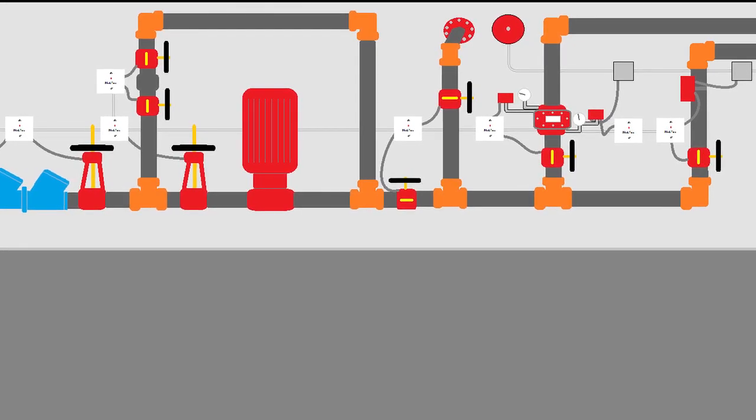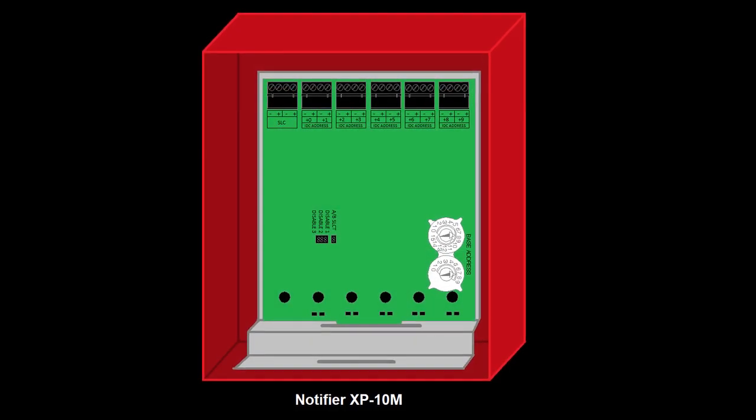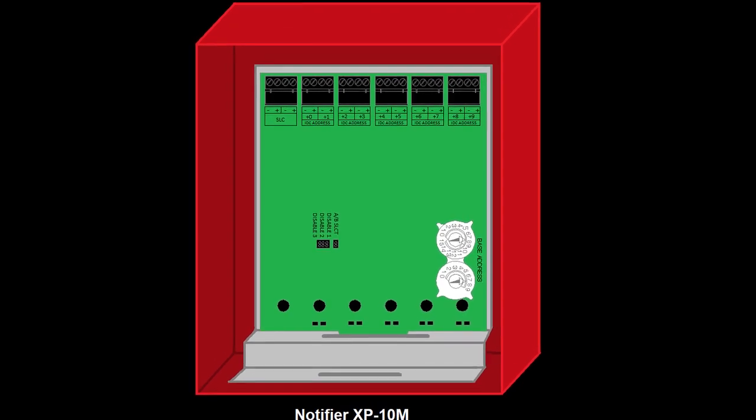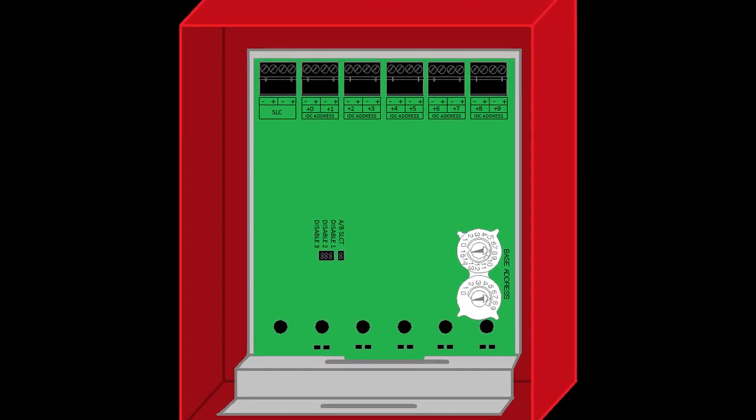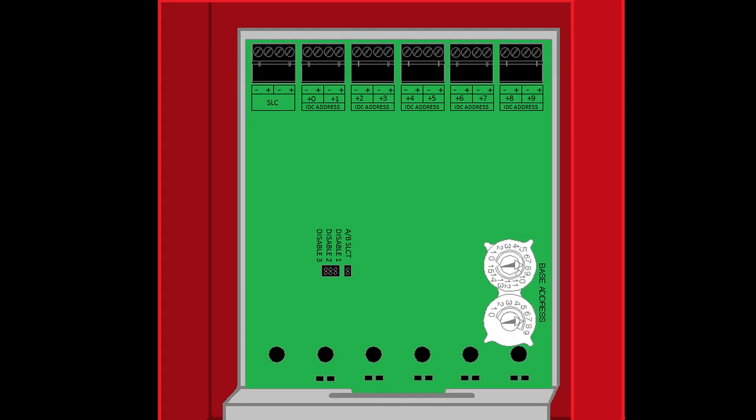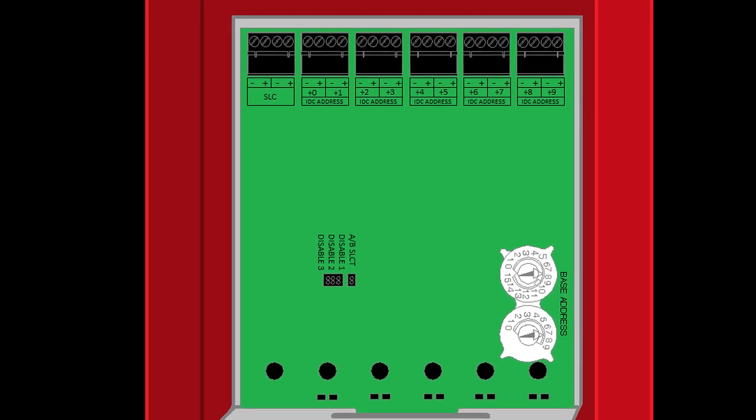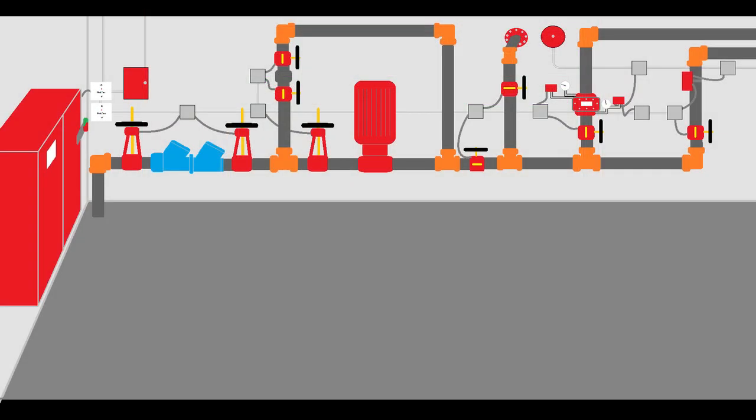Another option is to utilize a 10 point monitor module that Notifier makes for our first 10 points, then a single and dual monitor module for the remaining devices. If I were designing this room I'd probably prefer the individual modules by each device. I think it makes it a little bit easier for troubleshooting purposes because you can easily see which modules are monitoring which devices. But because I want to show how the XP10M gets wired, we're going to use that in this application.